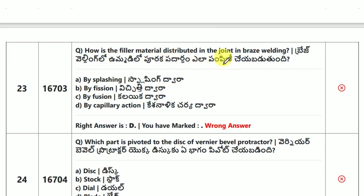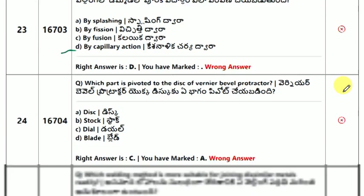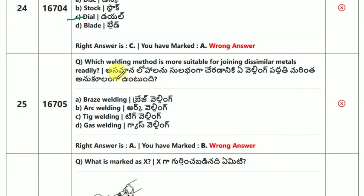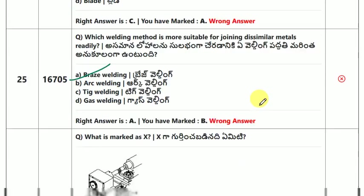How is the filler material distributed in the joint in brazing welding? The answer is by capillary action. Which part is pivoted to the disc of a vernier bevel protractor? Which welding method is more suitable for joining dissimilar metals? The answer is brazing welding.